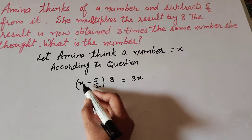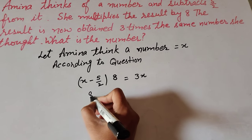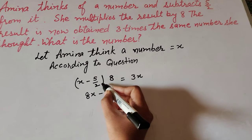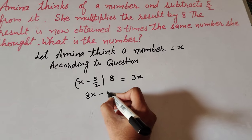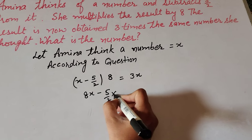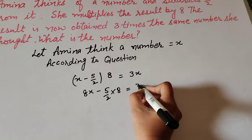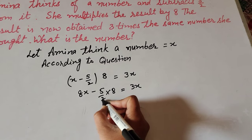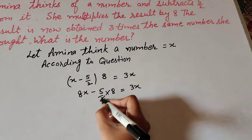x multiply by 8 equals 8x. Minus 5/2 multiply by 8 equals 3x. Now there is 2 in denominator and 8 in numerator; both are cancelled on the table of 2.